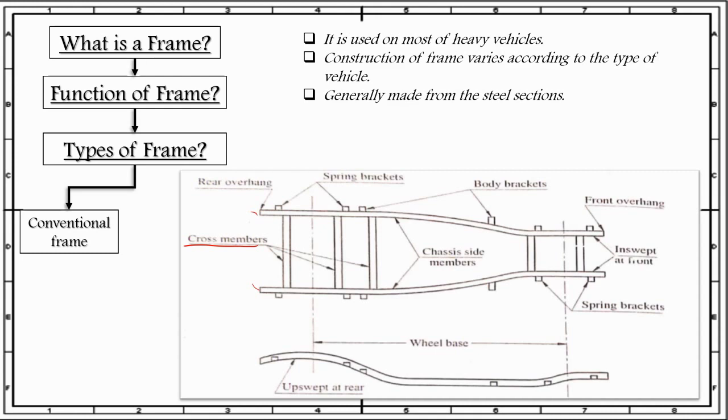The side members may be parallel with both horizontal and vertical planes, but more commonly are tapered inward. They are inswept at the front and upswept at the rear. The frame is narrowed down at the front to have a better steering lock, which gives a smaller turning circle and provides space for the pivoting and swinging of the front wheel. The upswept at the rear is primarily to give room for the vertical movement of the rear axle as it travels over road bumps and other surface inequalities.